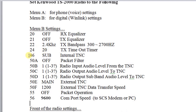Next item is item 46 — that's the internal TNC. We want that to reside on the sub radio, so set that to sub. The next series of items, the 50 series — A, B, C, D, E, and F — are all part of the packet series in the radio.